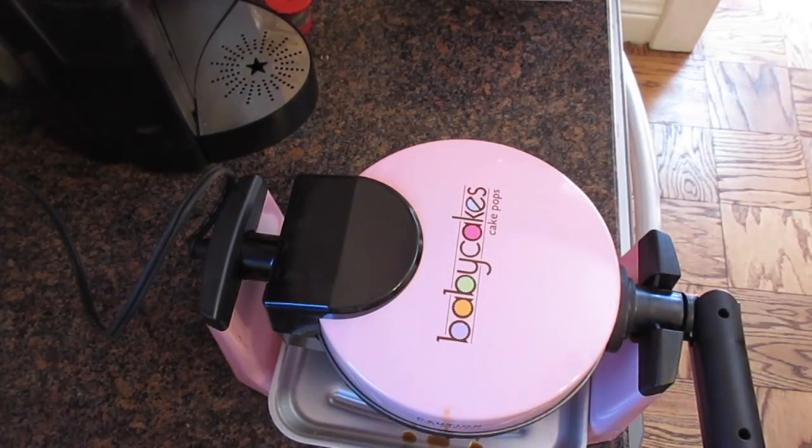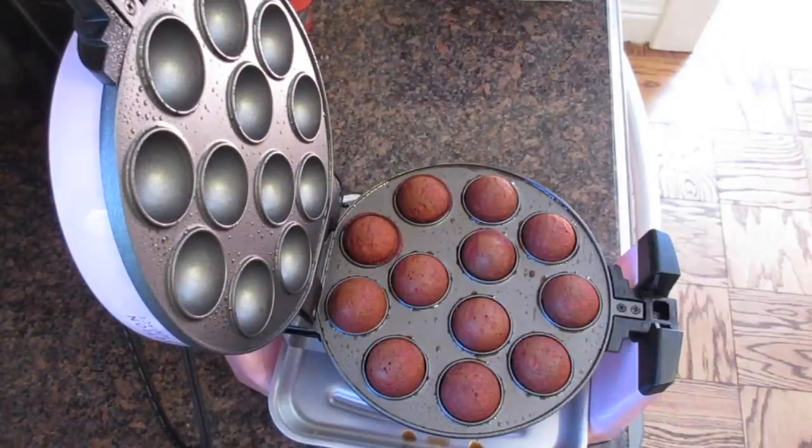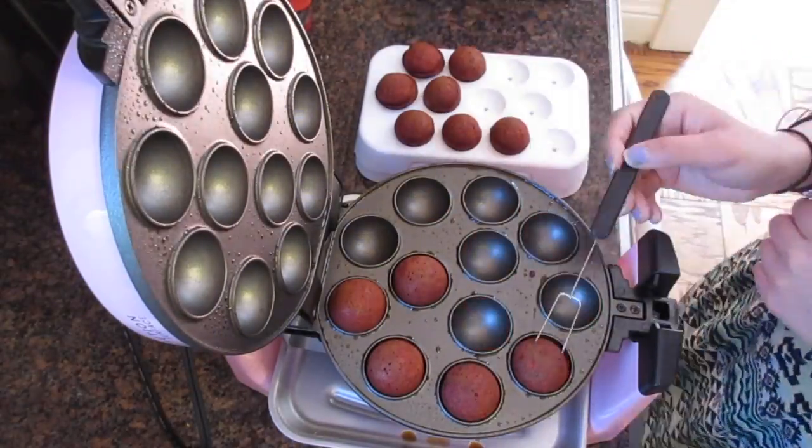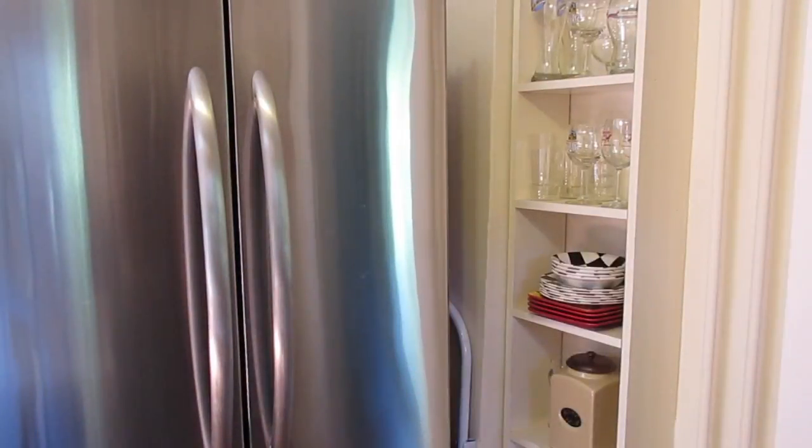After all of the cake mix is in, flip it upside down and wait two minutes. After those two minutes are up, gently take them out with the fork. Once they're all set in the container, put them in the fridge for around 15 minutes to cool off.